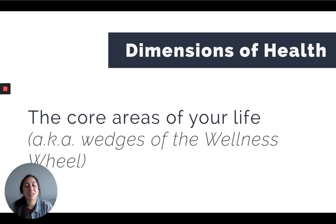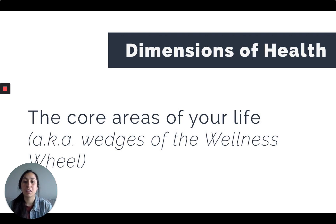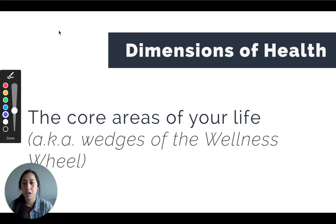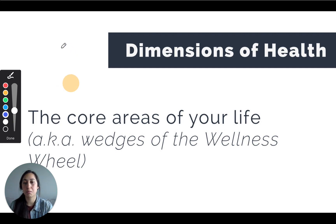Let's get back to the main focus — dimensions of health. These are the core areas of your life, also known as the wedges of the wellness wheel. If you remember from our previous lesson, we looked at a big wellness wheel and how our biggest concerns in life relate to the different dimensions of health. Let me just draw a little wellness wheel — each of these sections represents a dimension of our life.